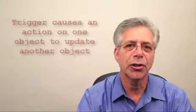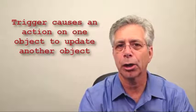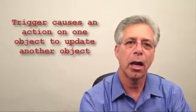trigger actually causes an action on one object to be able to go and do something like update a field on another object. And a really good example, I have a lot of clients who put a field on an account record called account class, and that's indicating whether they're a customer or they're a prospect.